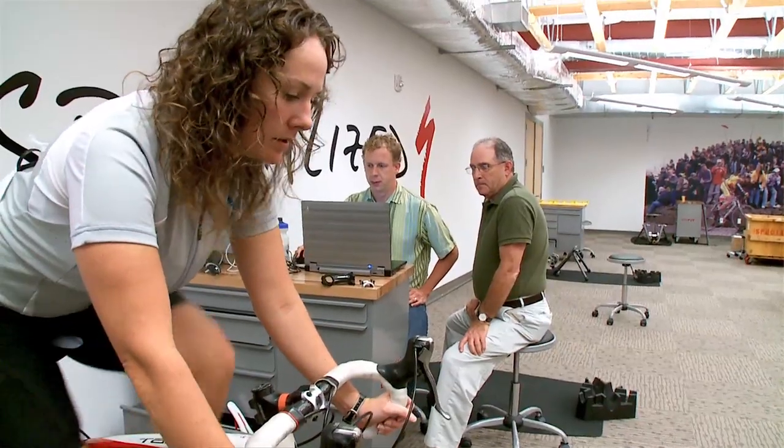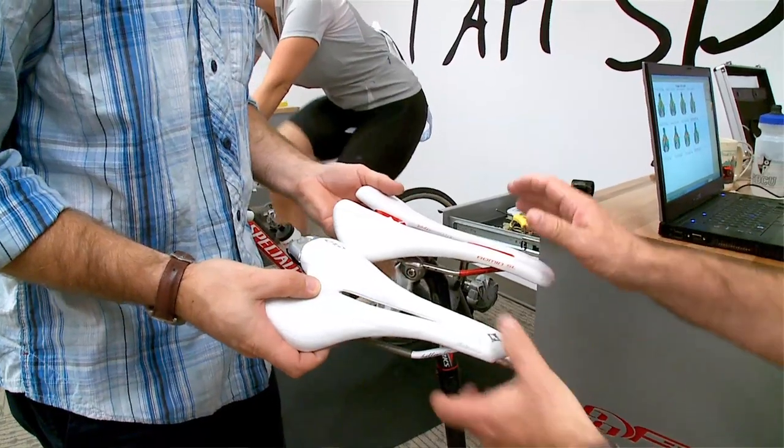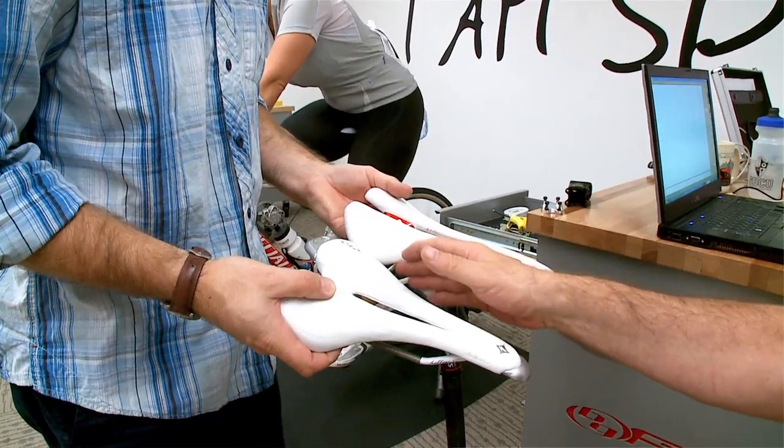Real-time pressure mapping also helped us design BG women's saddles with a central hourglass cutaway and beveled foam contours that measurably reduce unwanted pressure and improve blood flow.